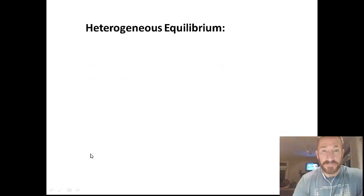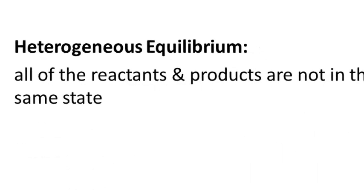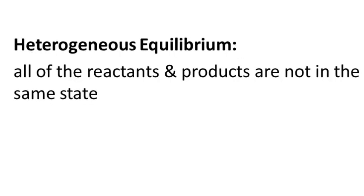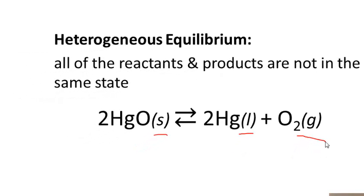Let's talk about the difference between heterogeneous and homogeneous equilibrium. To determine which type you have, look at the states of all substances in the reaction. If all the reactants and products are not in the same state, it's referred to as heterogeneous equilibrium. For example, mercury oxide decomposes to form mercury and oxygen gas — this is definitely a heterogeneous equilibrium because we have a solid, a liquid, and a gas: all three are different states.